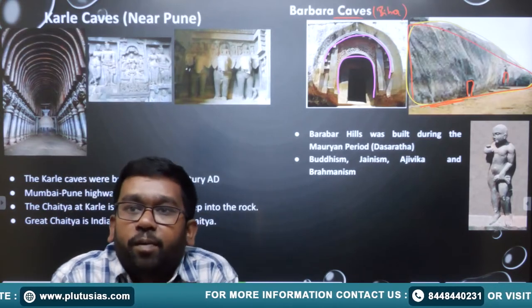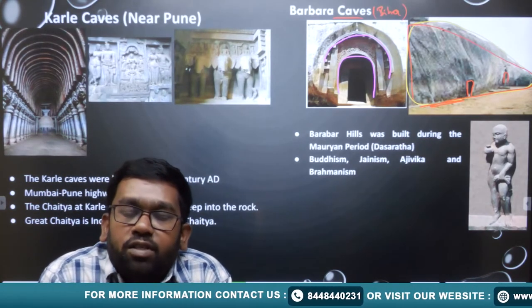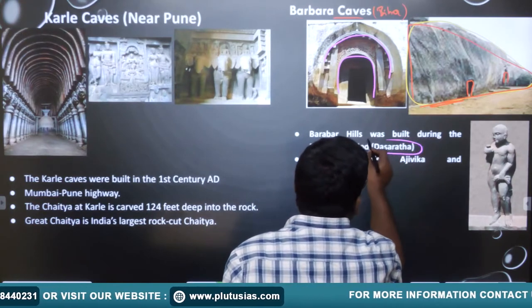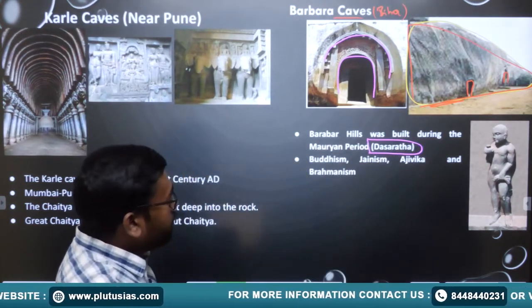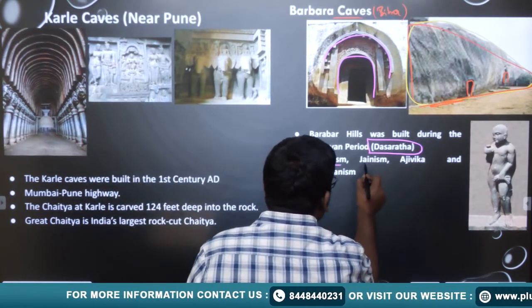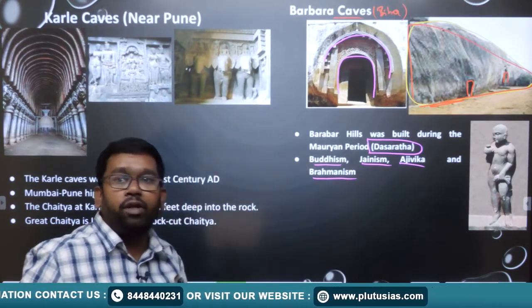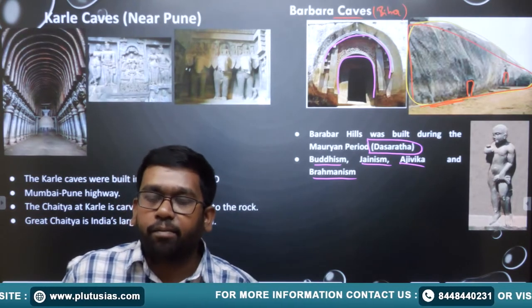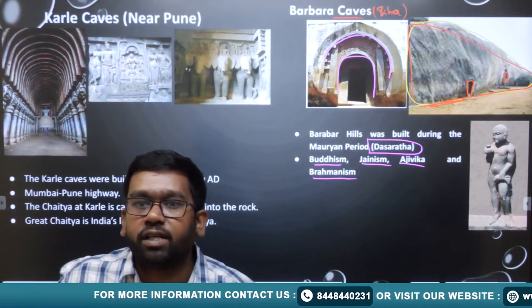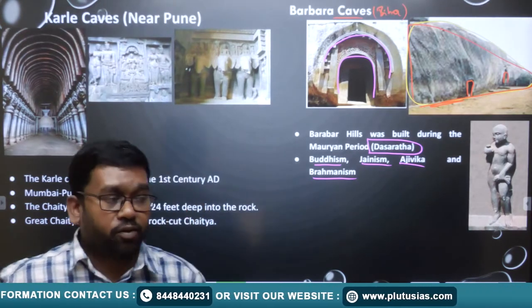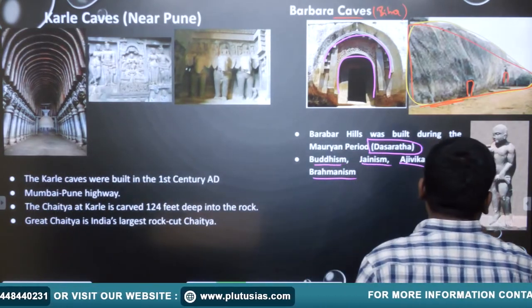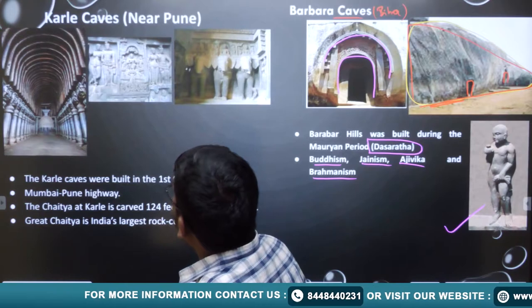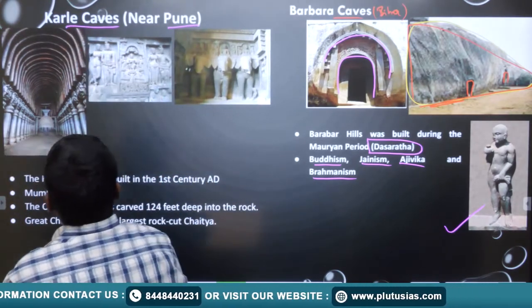Barabar caves is so famous because it is one of the earliest and oldest caves in the Indian subcontinent. It was made by the Mauryas — especially the successors of Ashoka — and it is said it was completed by Dasharatha, who was the grandson of Ashoka. The most important feature is that Buddhism, Jainism, Ajivika, and Brahmanism — all four important religious sects of ancient India — are represented here.